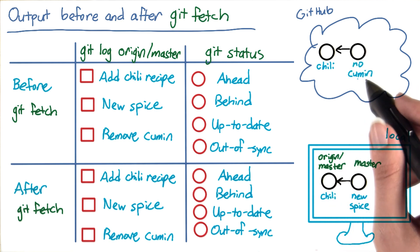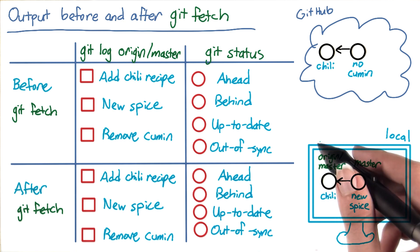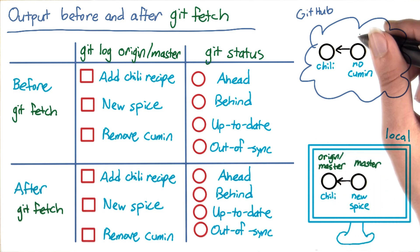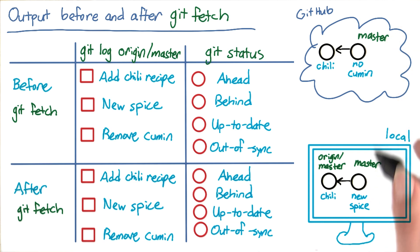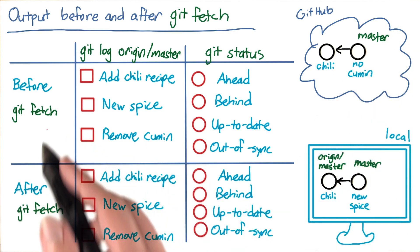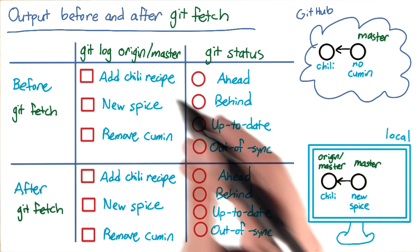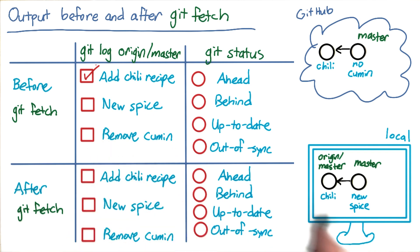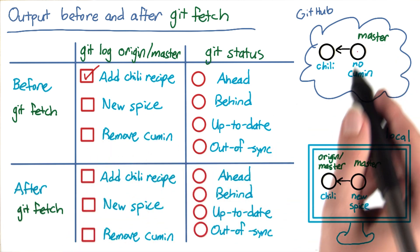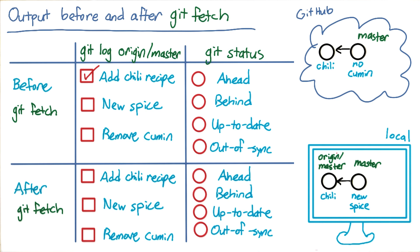After you cloned, Sarah added the no cumin commit on GitHub, but your origin slash master branch won't reflect that yet. So this is the state of master on GitHub. This was the state of both repositories right before you ran git fetch. So if you ran git log origin slash master, you should have seen that Larry's commit adding the chili recipe was present, but your commit adding a new spice and Sarah's commit removing cumin were not present on the origin slash master branch.